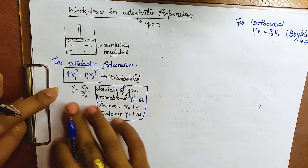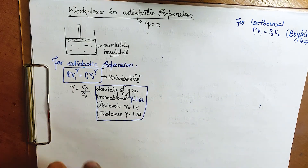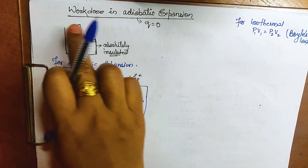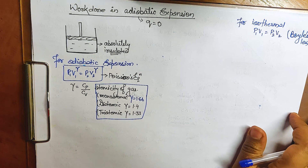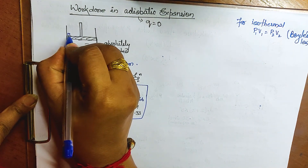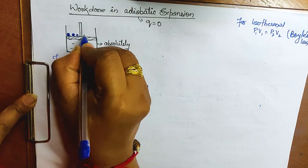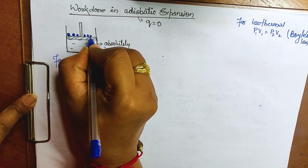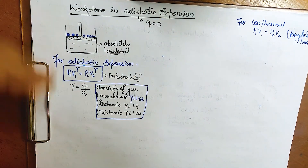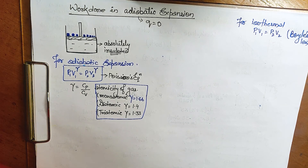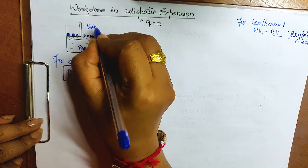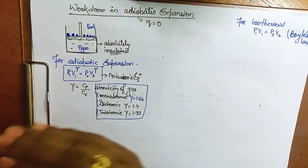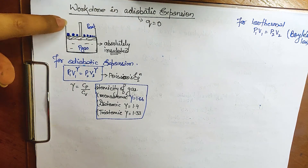Since this came up, I have explained it. Now we will use Poisson's equation to find the work done in adiabatic expansion. We put a very small mass over the piston to keep it in equilibrium, so that p_external equals p_gas. The piston is frictionless, so it can move up and down — expansion and contraction will occur.